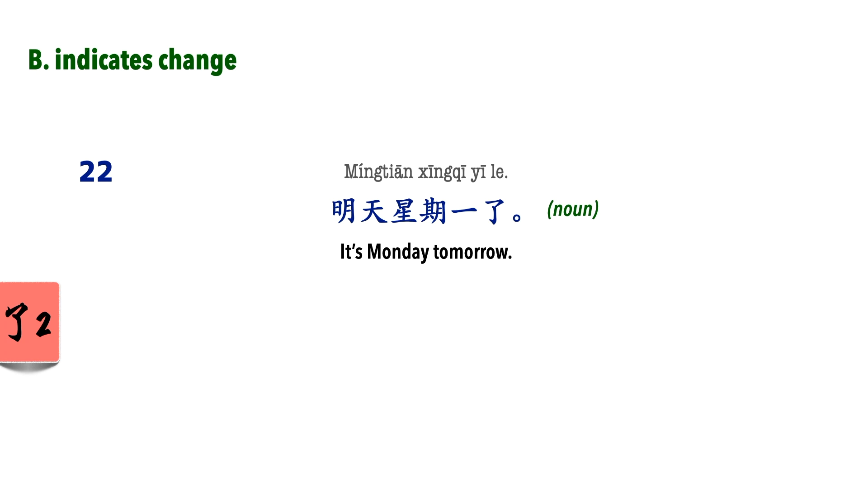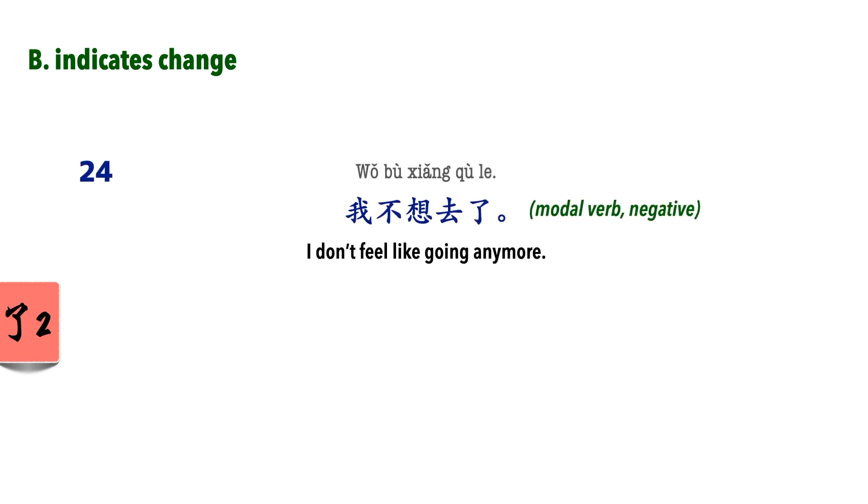明天星期一了. So, can we say simply 明天星期一? Yes, we can. 了 adds on a sense of change. Without 了, you're simply stating the fact that it is Monday tomorrow. 我有女朋友了. You previously had no girlfriend, now you've got one. 我不想去了. In this example, with or without 了 makes quite a bit of difference. Having 了 here means that you previously wanted to go, but now you've had a change of mind.